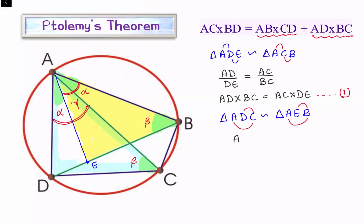So ratio of sides, AC upon DC equals AB upon BE. Let's do cross multiplication. We are getting AC times BE equals AB times DC. And we'll call this result number 2.